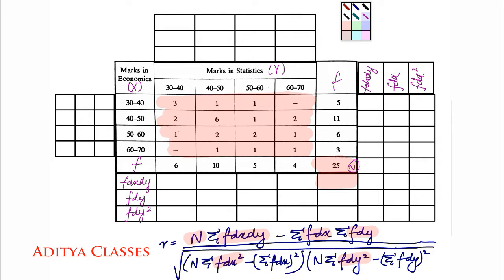Now we need to find dx and dy. The first problem is that we have grouped data, and we need to find mid values. For 30–40 the mid value is 35, for 40–50 it is 45, then 55 and 65. Similarly, we find mid values for x, that is marks in economics.